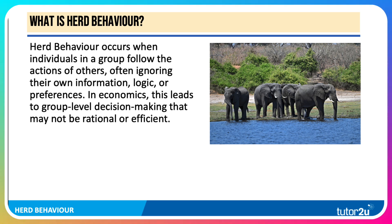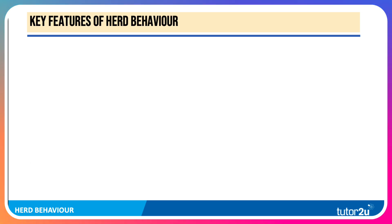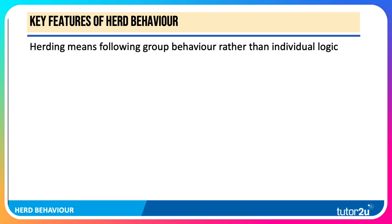Herd behaviour is when the individuals in a group follow the actions of others, often ignoring their own information, their own logic or preferences. Effectively, this leads to group-level decision-making that is not always perfectly rational or economically efficient. It's based on the simple idea: if everyone else is doing it, it must be right, even if that's not actually the case. Herding means following group behaviour rather than individual logic.